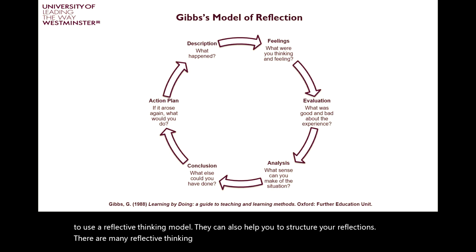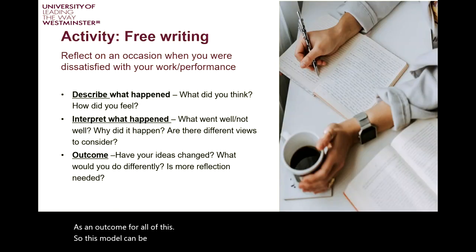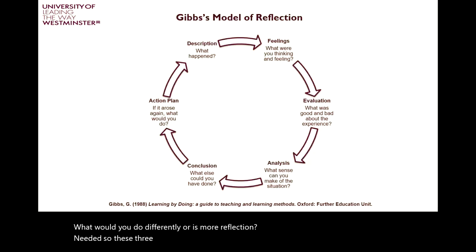This model can be condensed into three simplified elements. First, describe what happened: what did you think and how did you feel? Then interpret what happened: what went well, not so well, why did it happen the way it did, and are there different views to consider? And finally, outcome: have your ideas changed, what would you do differently, or is more reflection needed? These three sections are a condensed form of the Gibbs cycle.